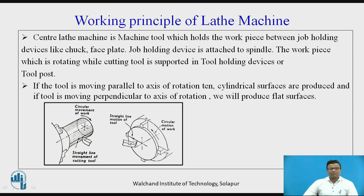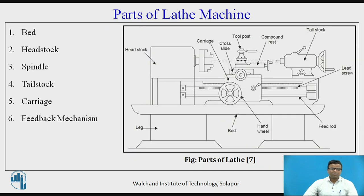This is the principle of the lathe machine, and the lathe machine is mainly used for metal cutting operations. This is a schematic diagram of the lathe machine which consists of all the components. Now, what are the different main parts of the lathe machine?